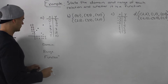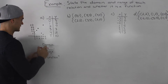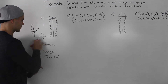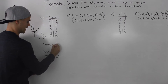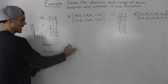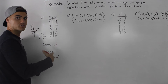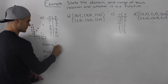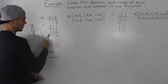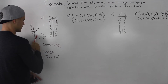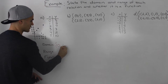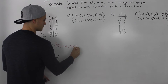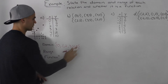For the domain, we list out the set of values that the independent variable can take — the x values — from lowest to highest, and if any values repeat we just write them once. So zero comes first; these are already in order: zero, one, two, three, four, five, and there are no repeating values so we wrote all of them once.